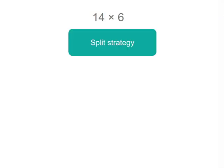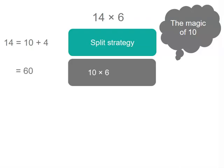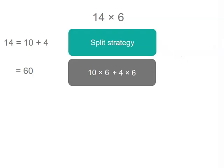In fact, we can split 14 into 10 plus 4. The reason we do that is because multiplying by 10 is something we can do quite readily. So we've now got 10 times 6 plus 4 times 6. So 10 times 6 gives us 60, and 4 times 6 gives us 24.